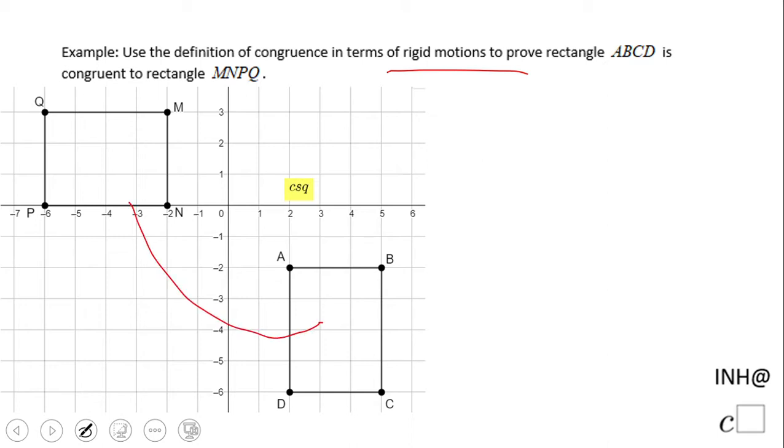If we notice here, we have ABCD and the corresponding vertices. So very important to look here that A and M are the ones that are corresponding, for example, and B and N. So how do we get these guys?